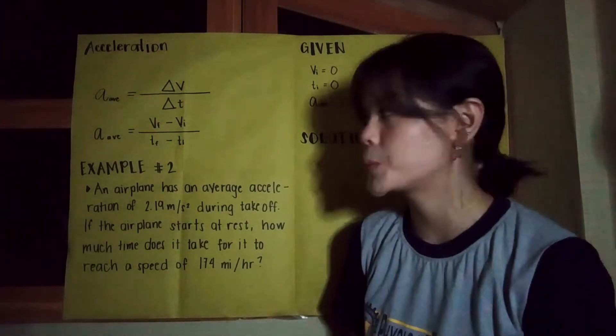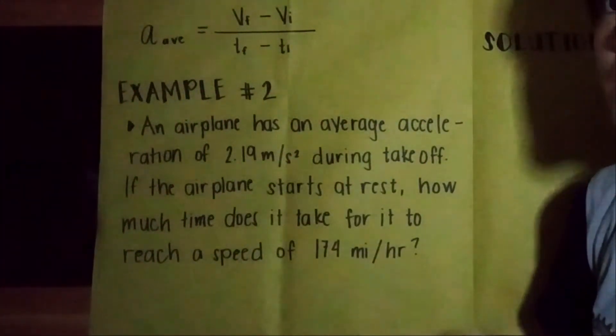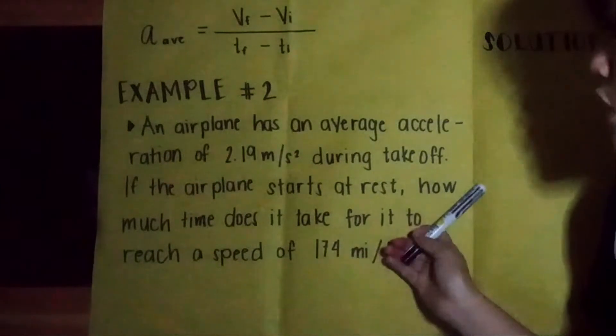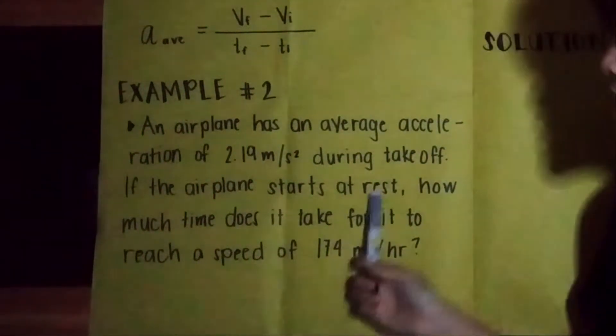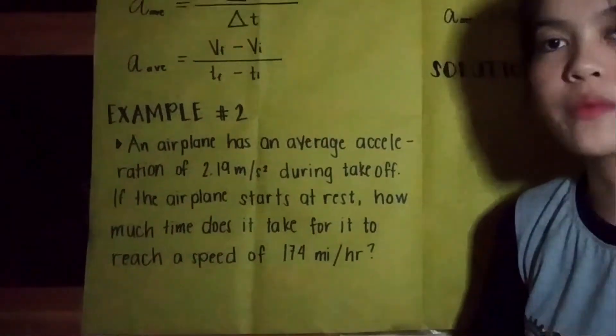Now let's move forward to our sample problem. An airplane has an average acceleration of 2.19 meters per second squared during takeoff. If the airplane starts at rest, how much time does it take for it to reach a speed of 174 miles per hour?